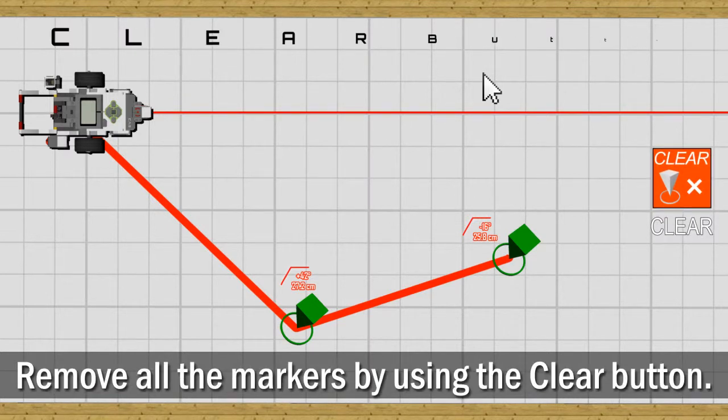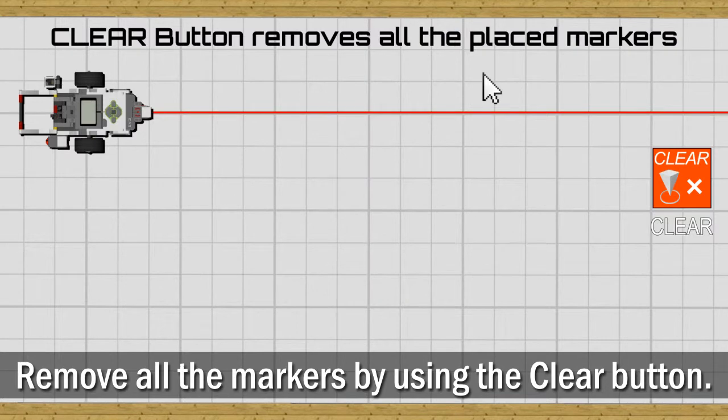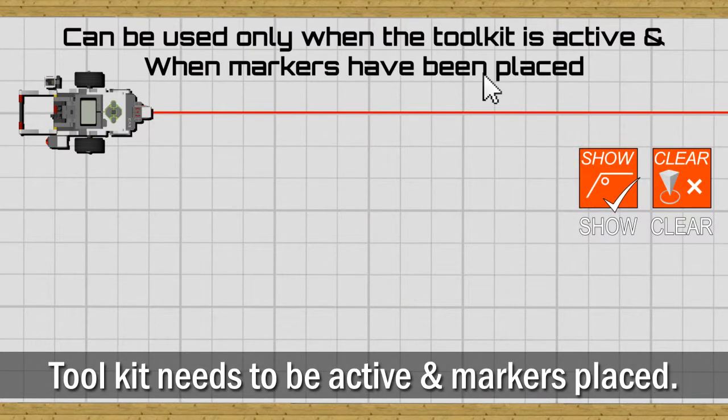The Clear button is used to remove all of the markers you placed around the world. This button can only be used when the toolkit is active and markers have been placed.